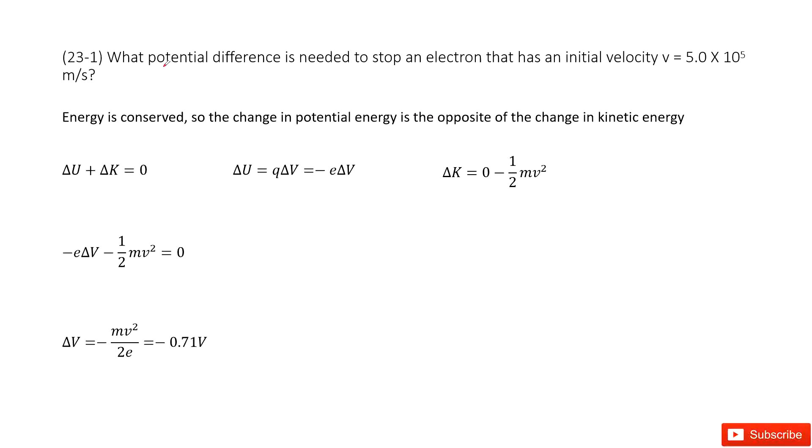So we need to find the potential difference, delta V, needed to stop an electron. Electron is the keyword - electron carries 1 unit negative charge, which has an initial velocity of 5 times 10 to the power 5 meters per second.